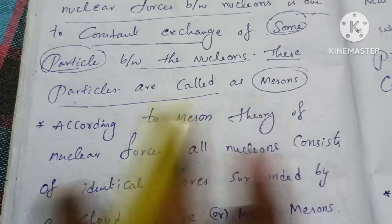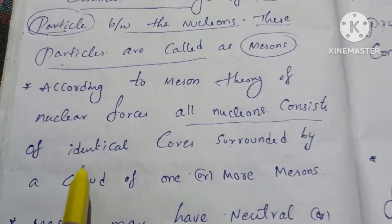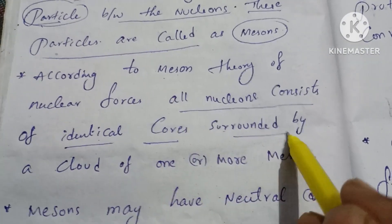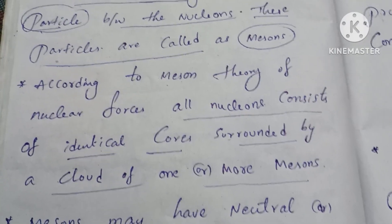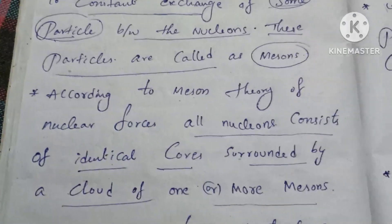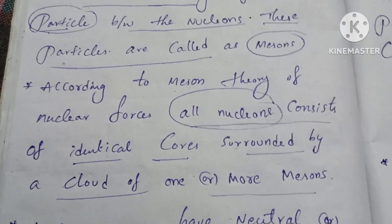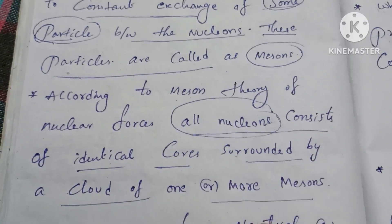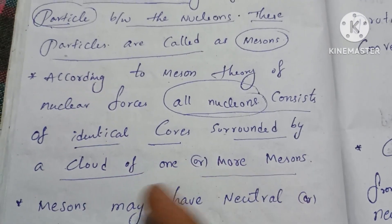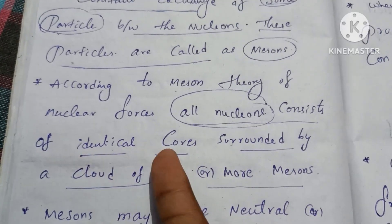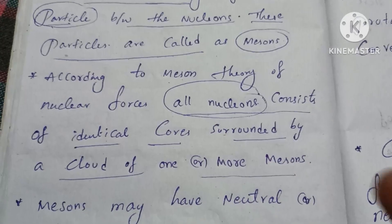According to the meson theory of nuclear force, all nucleons consist of identical cores surrounded by a cloud of one or more mesons. The nuclear forces are mediated by this cloud of one or more mesons surrounding each nucleon.